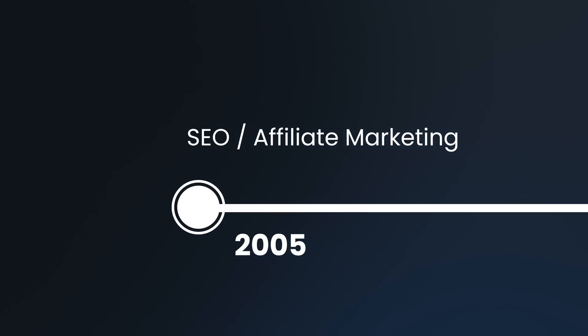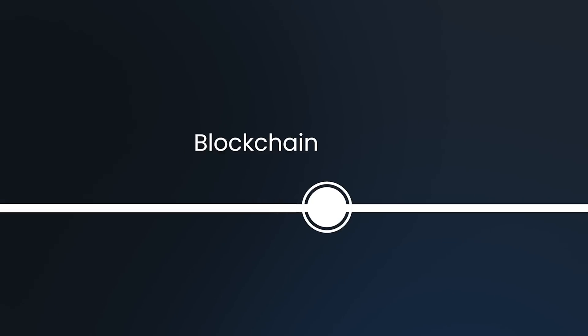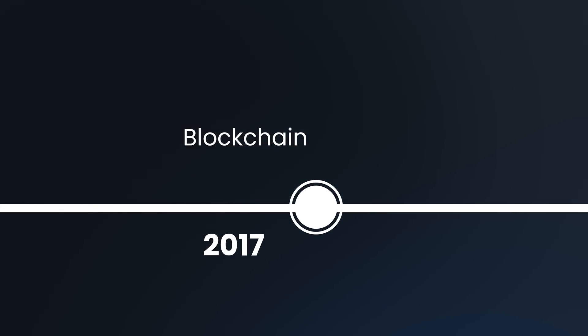There's only been a handful of opportunities like this in the past 20 years: SEO and affiliate marketing back in 2005, social media and advertising in 2010, blockchain in 2017, and now AI in 2023. In just a few years, this is going to be mainstream — something everyone will do. This year is your chance to get on board.